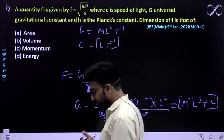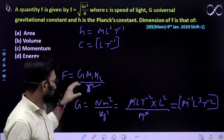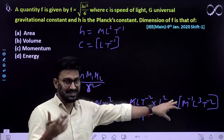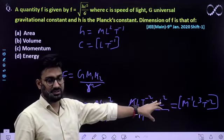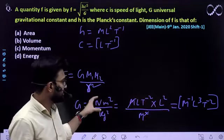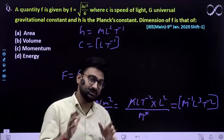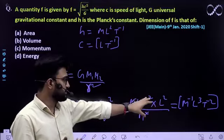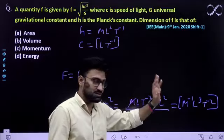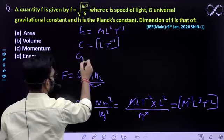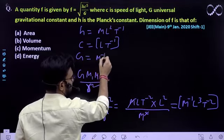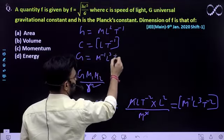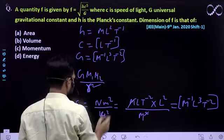Dekho bhai, it's always better that you should remember the dimension of each physical quantities or derived quantities. Jitne bhi physical or derived quantities hain, sabke dimension aap yaad rakho. If you don't remember, then you'll have to work a bit harder, but you can find out dimensions from any expression. So, G ki dimension: M⁻¹L³T⁻².